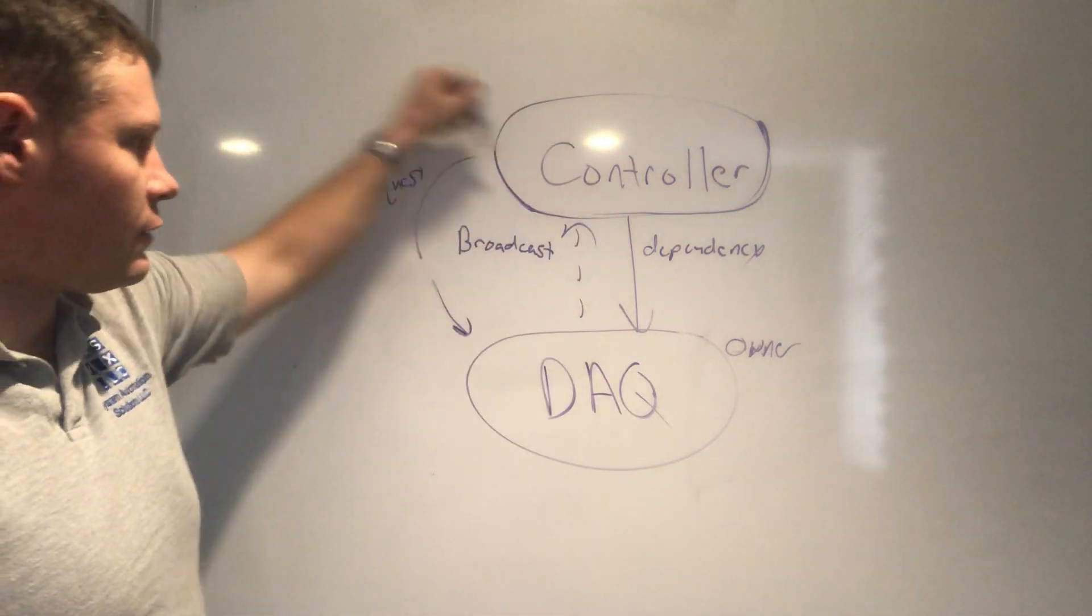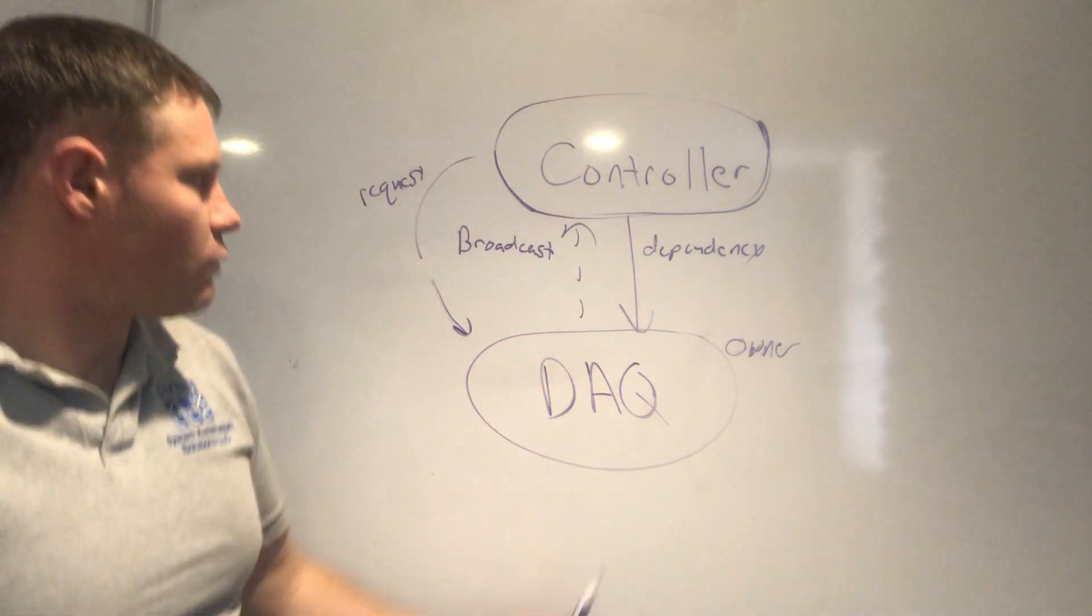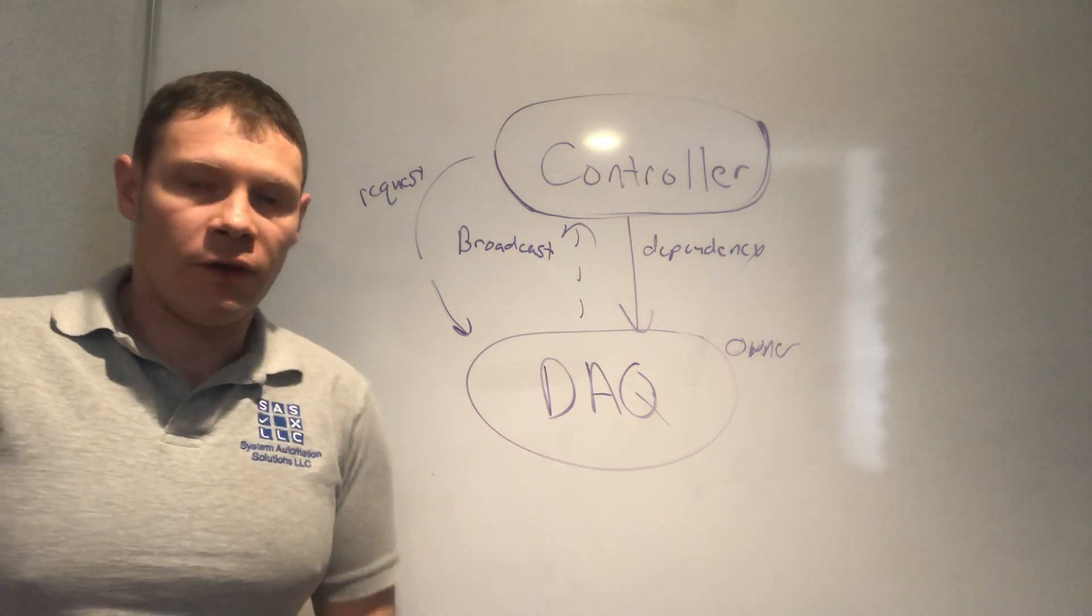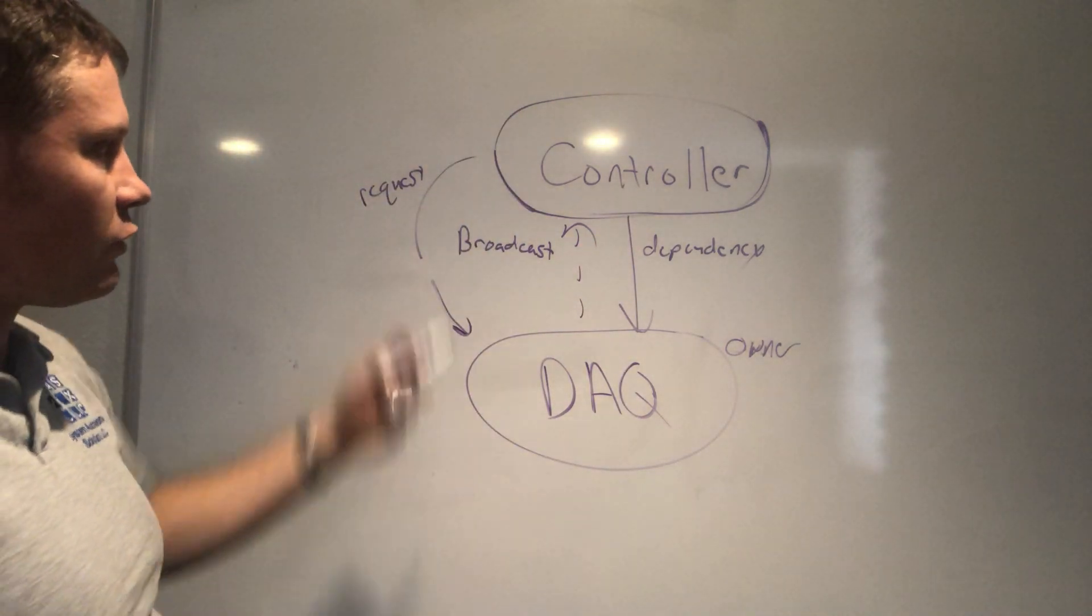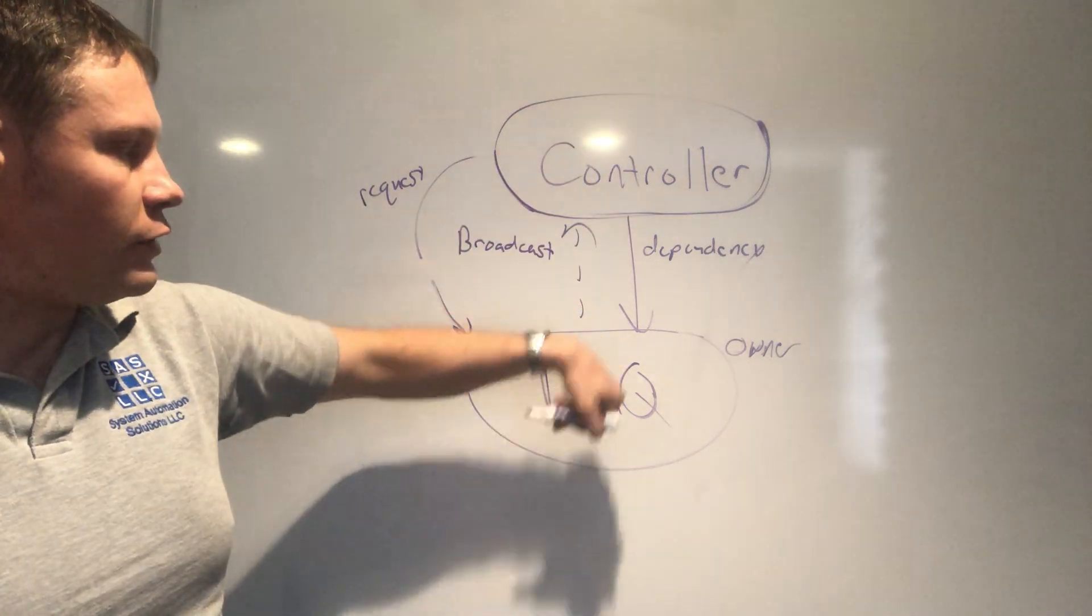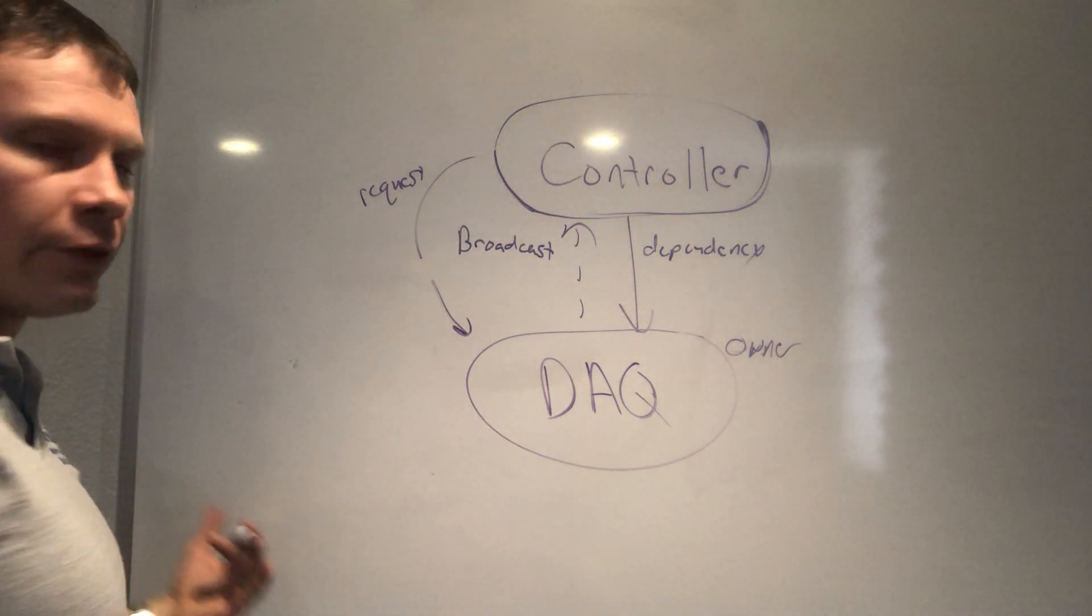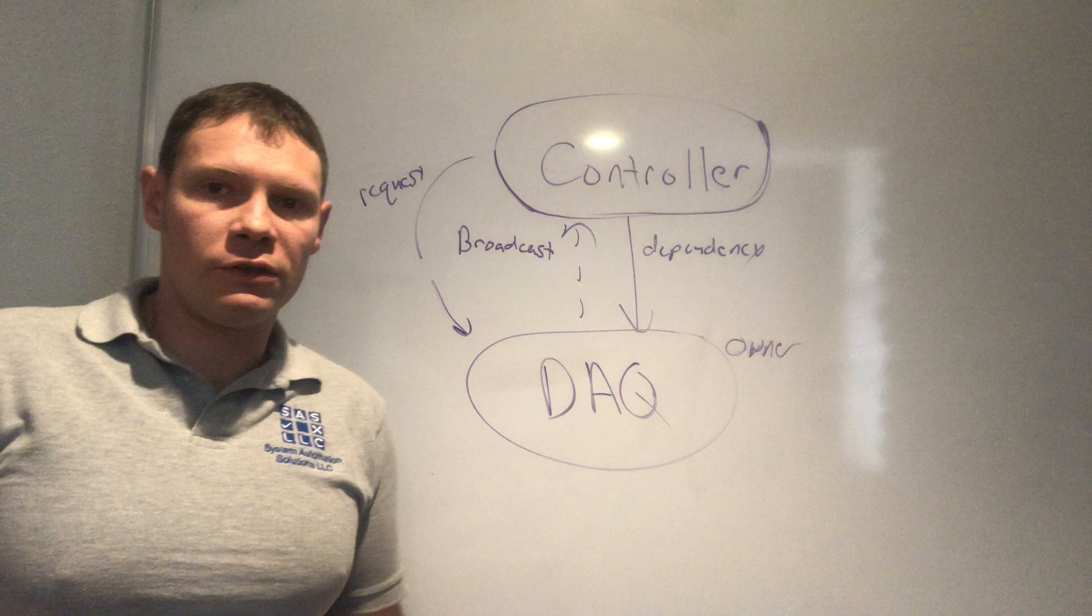So the controller is going to request that the DAC does stuff and the DAC is going to broadcast data back. And as long as that's the only message flowing back and forth between them, then your controller will depend on your DAC, but your DAC will not depend on the controller at all. And then you can reuse it in other projects.